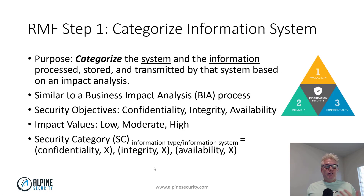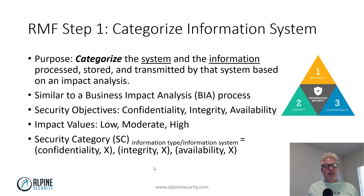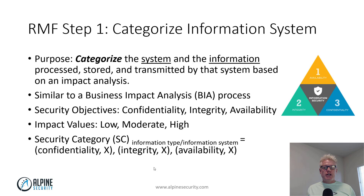The first step is to categorize the information system — to categorize the system and the information on that system that's processed, stored, or transmitted. We typically do the categorization based on the three tenets of information security: confidentiality, integrity, and availability, or the CIA triad. This is very similar to a business impact analysis, in which you identify critical systems, except the business impact analysis typically focuses on maximum tolerable downtime, recovery time objective, and recovery point objective. With RMF, we're focused on security.